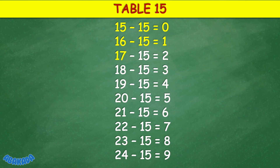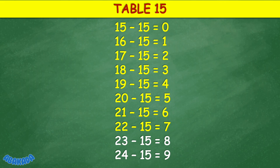Table 15: 15 minus 15 equals 0, 16 minus 15 equals 1, 17 minus 15 equals 2, 18 minus 15 equals 3, 19 minus 15 equals 4, 20 minus 15 equals 5, 21 minus 15 equals 6, 22 minus 15 equals 7, 23 minus 15 equals 8, 24 minus 15 equals 9.